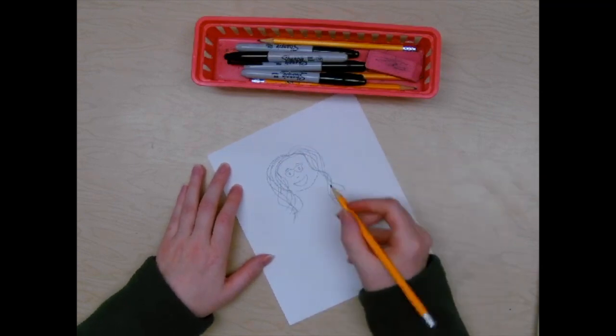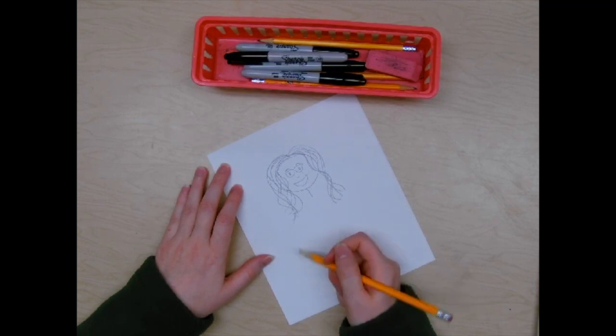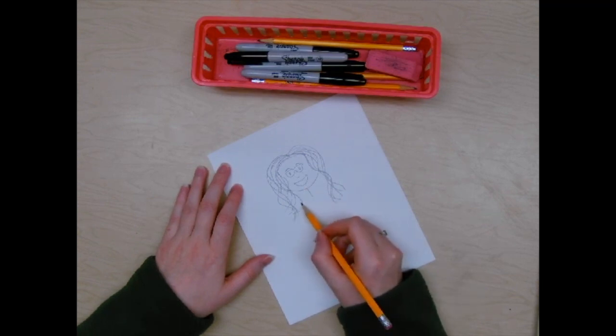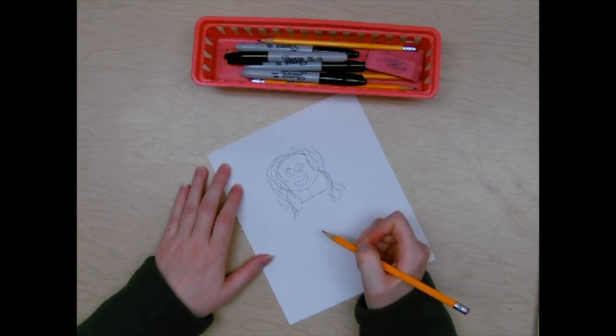Once you're happy with the face, we need to give our stick person a neck. So we're going to draw a short little line coming from the head down. Now we're going to add the shoulders. So we're going to draw a line that goes across our body for the shoulders. It should connect to the bottom of your neck.